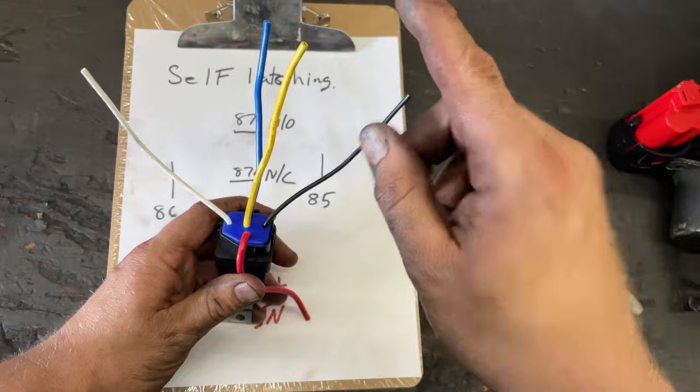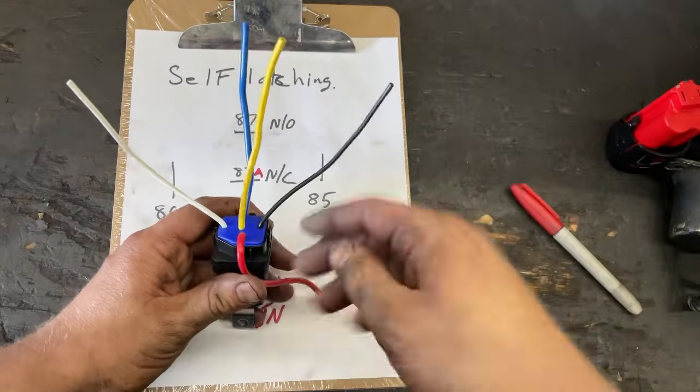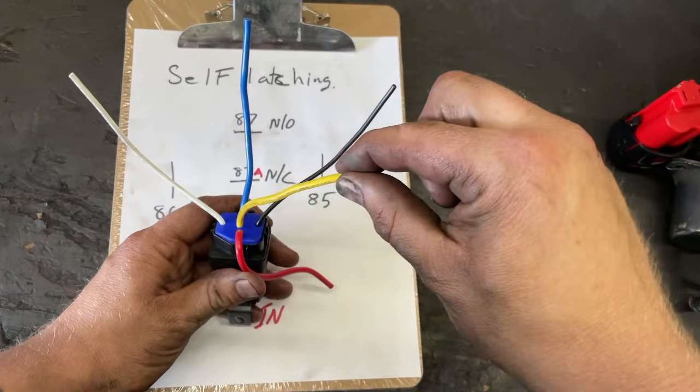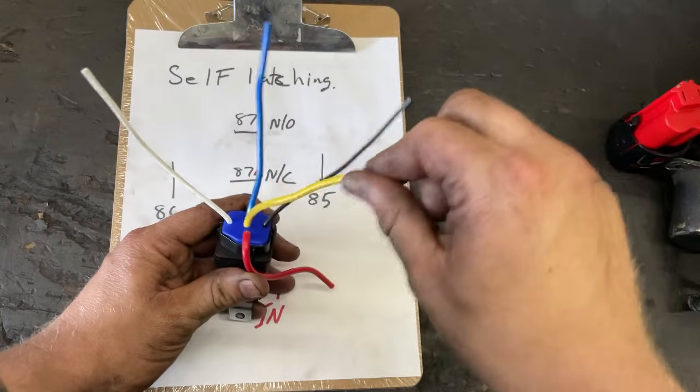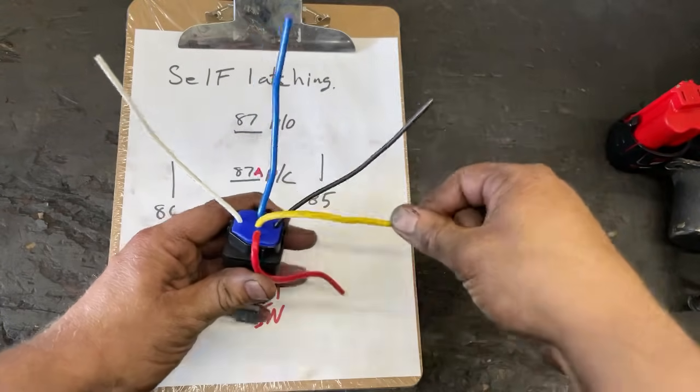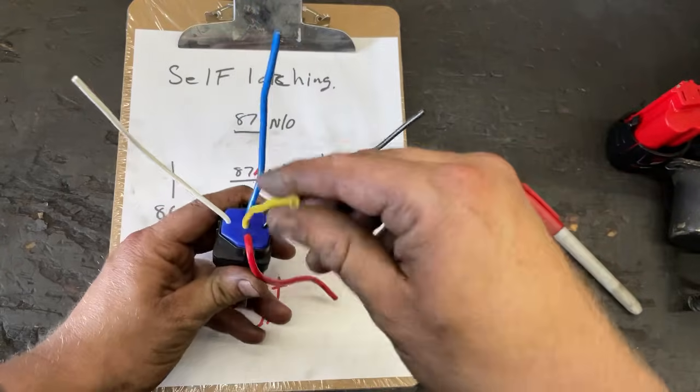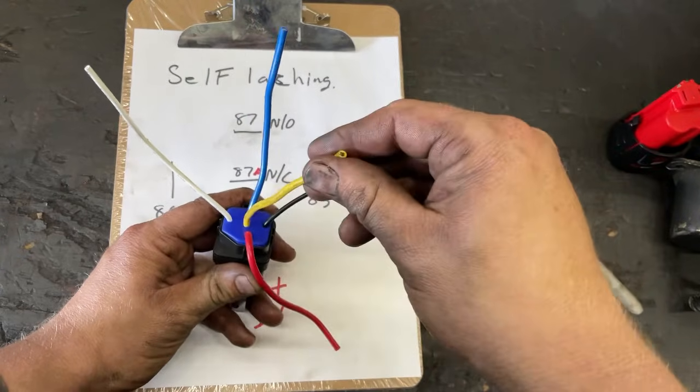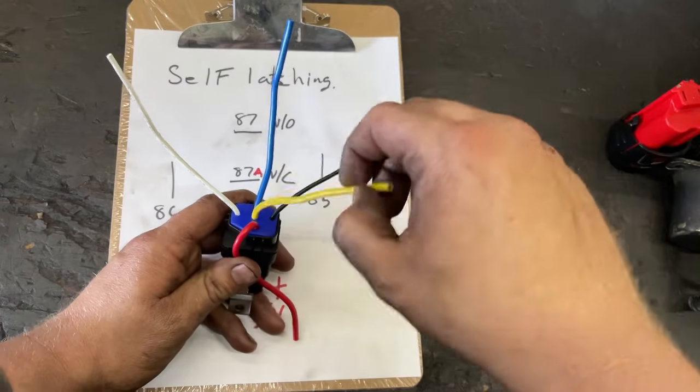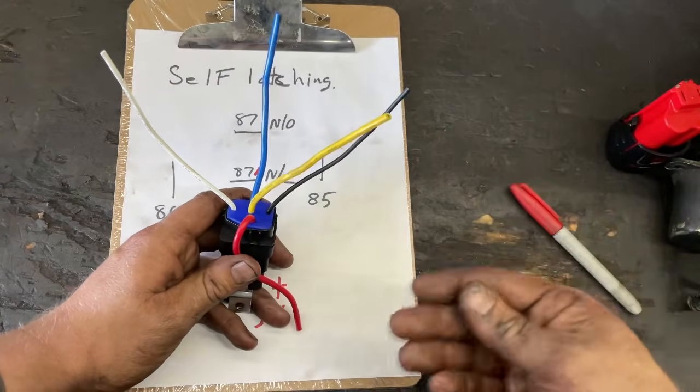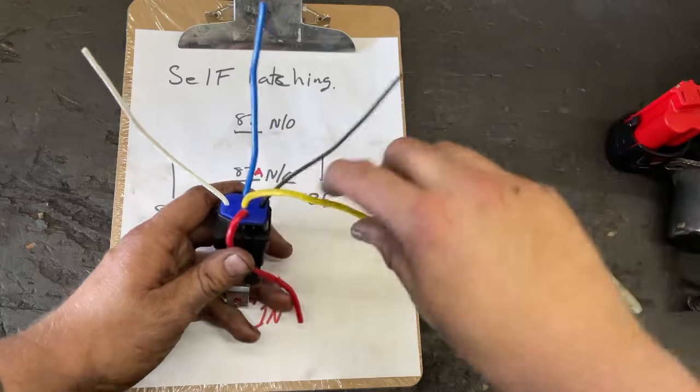Now if you want something to have power when the relay is not energized, this one would be the one you want to hook up. 95% of things are not going to be hooked up that way, so you can just disregard this terminal. But if you wanted something that's on without the coil ignited, then you would want this. Maybe to shut something off, that type of thing is what you would use that for.